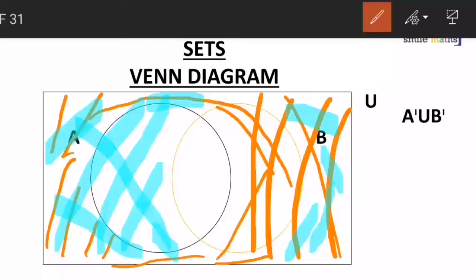So when we talk of union, we are talking of combining the two sets that we have. So when we look at this carefully, we can see that when we talk of A complement union B complement, it's going to be almost all parts of the universal set, just without the intersection of A and B.